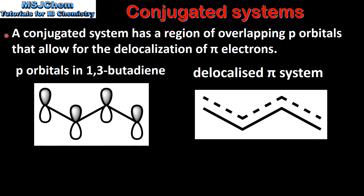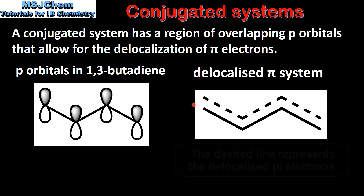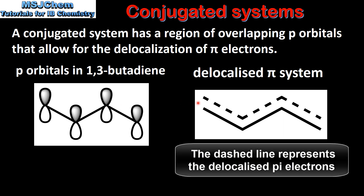A conjugated system has a region of overlapping p orbitals that allow for the delocalization of pi electrons. On the left we can see the four p orbitals in 1,3-butadiene. These p orbitals overlap to form a delocalized pi system which we can see on the right. The four pi electrons are delocalized or spread out over the whole pi system.